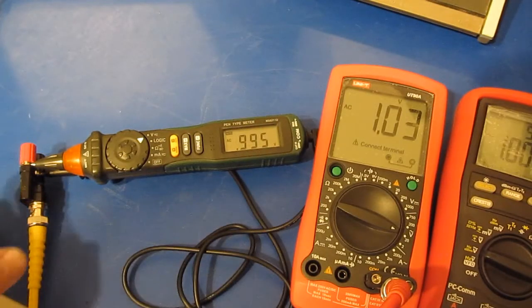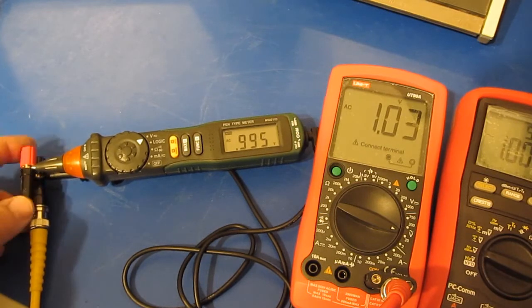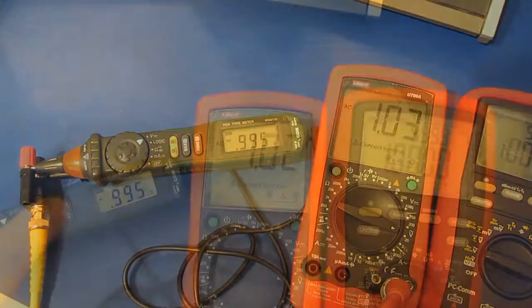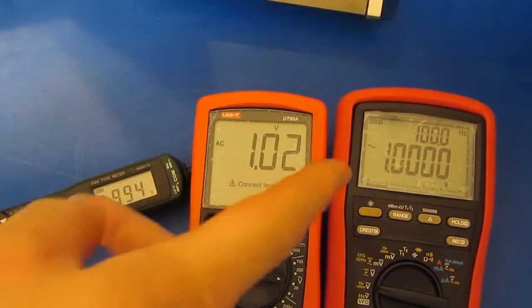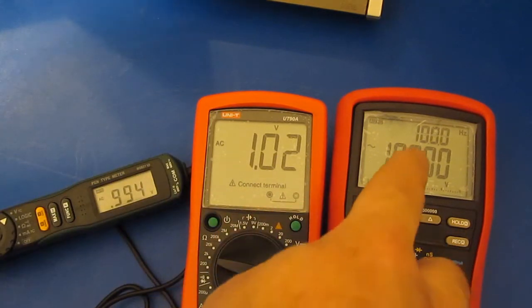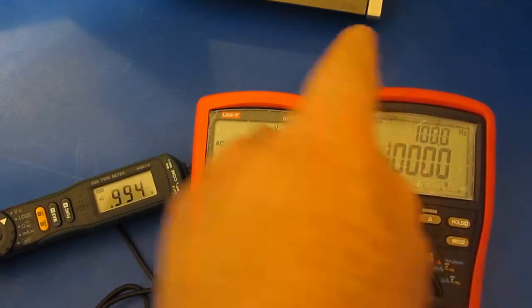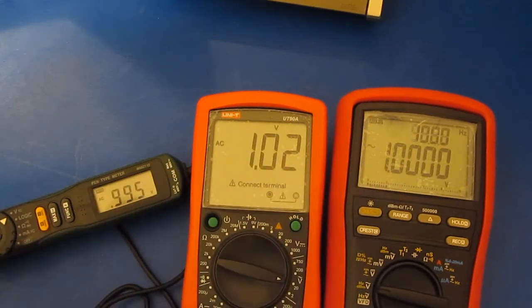You can see I've changed out the probe on the Maztec and I've gone ahead and installed this small banana BNC adapter. Okay so currently all three meters are tied together in parallel. And I'm applying a 100 Hz sine wave. This is at roughly one volt. You can see all three meters are reading roughly the same value.